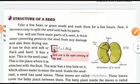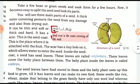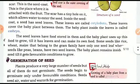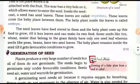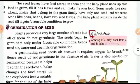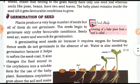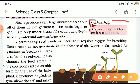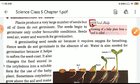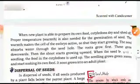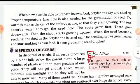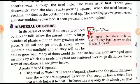Then we saw the structure of seed, the role of cotyledons, and what embryos are. Then we went to germination — the growing of a baby plant from a seed is called germination. We moved ahead and have now come to the topic of dispersal of seeds.